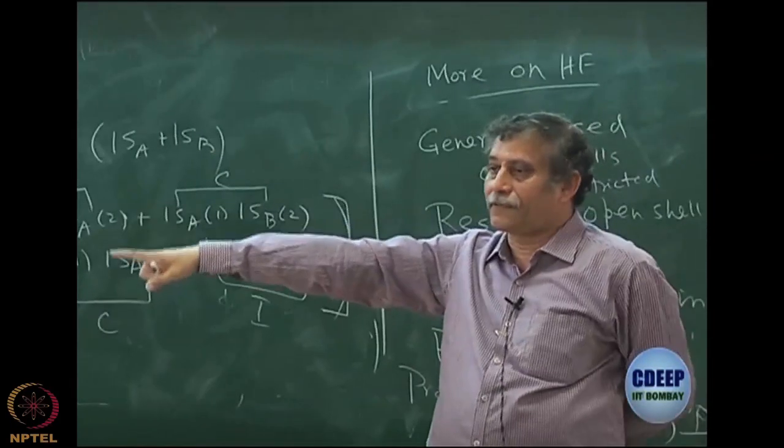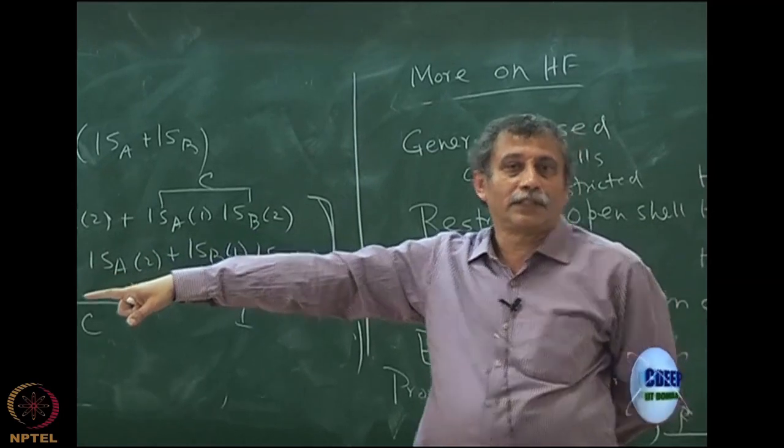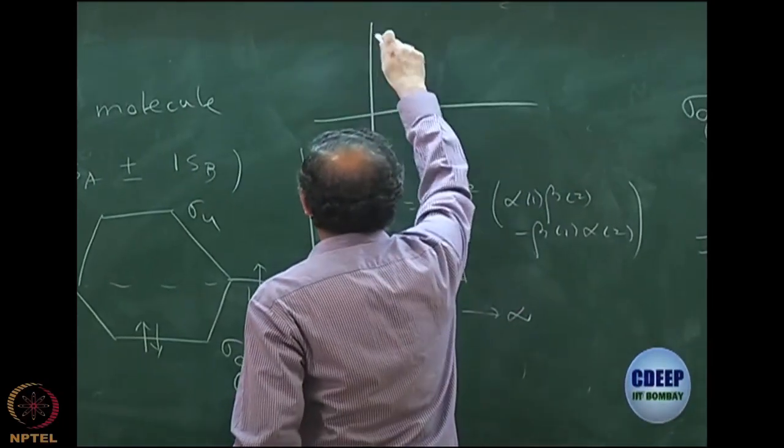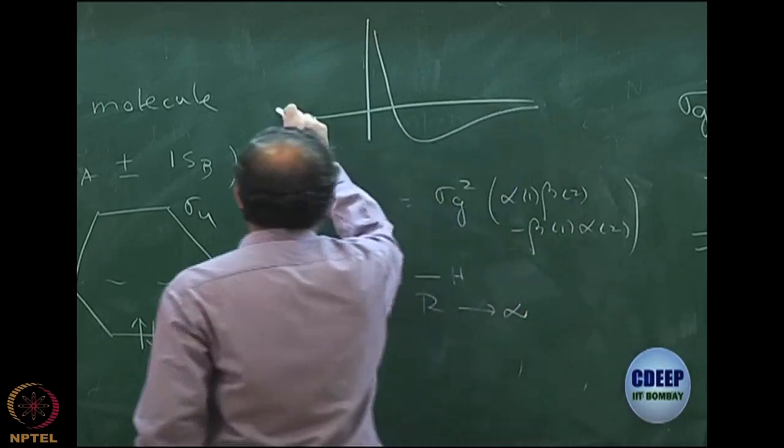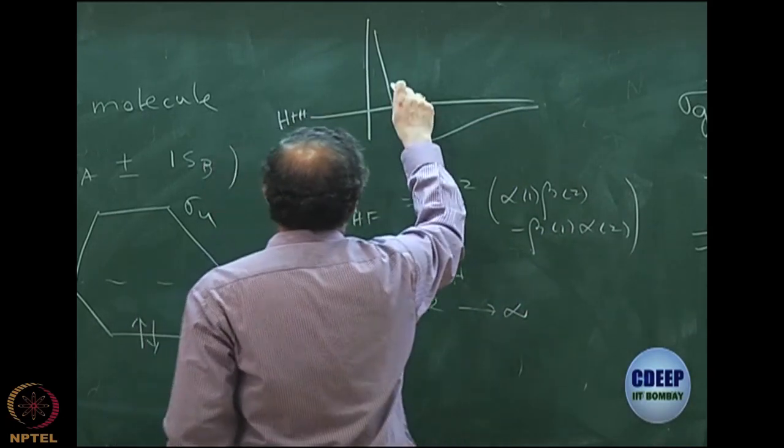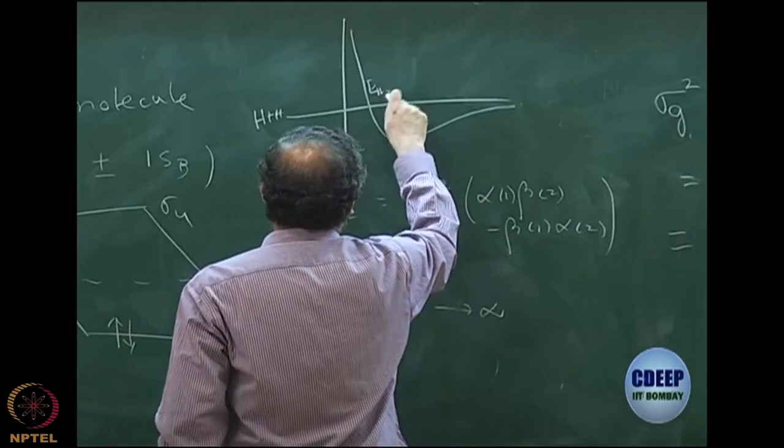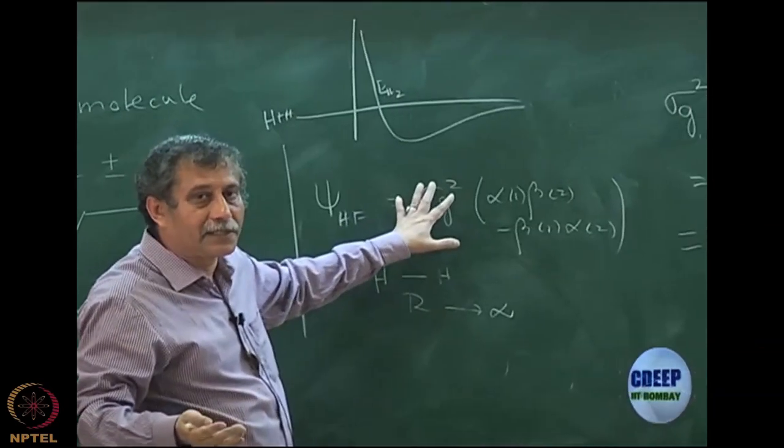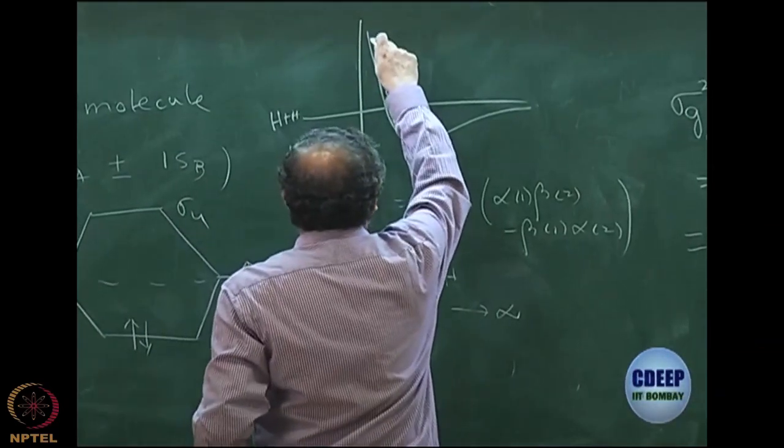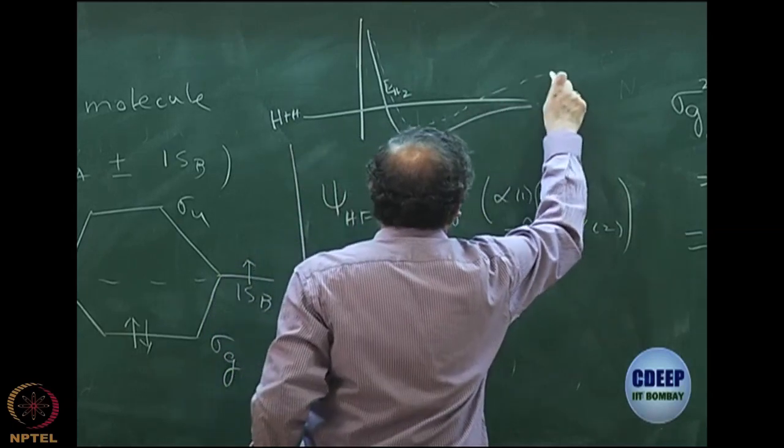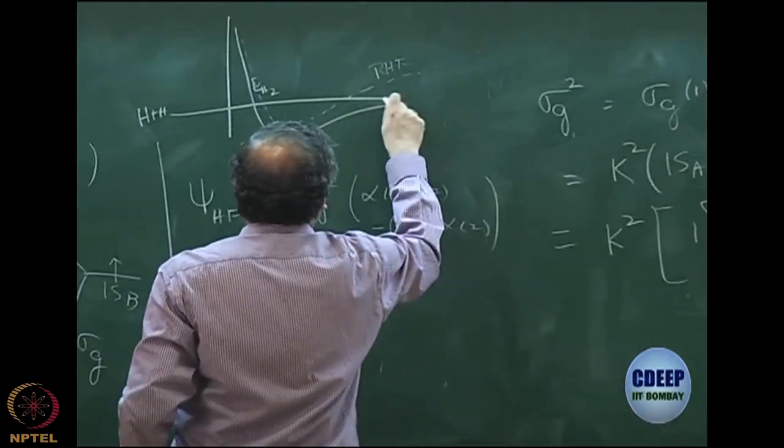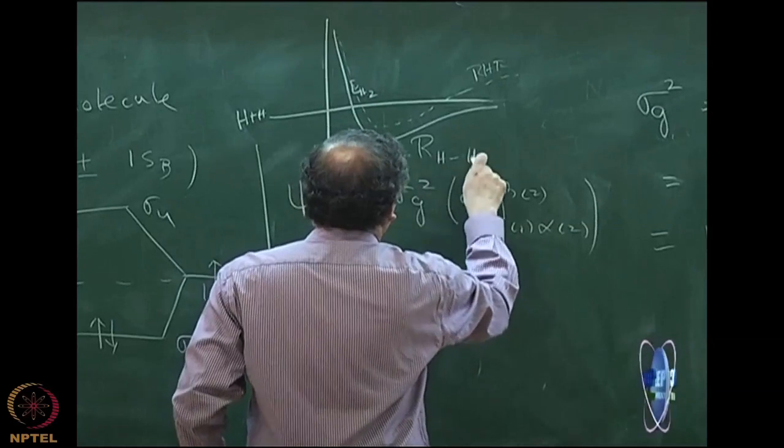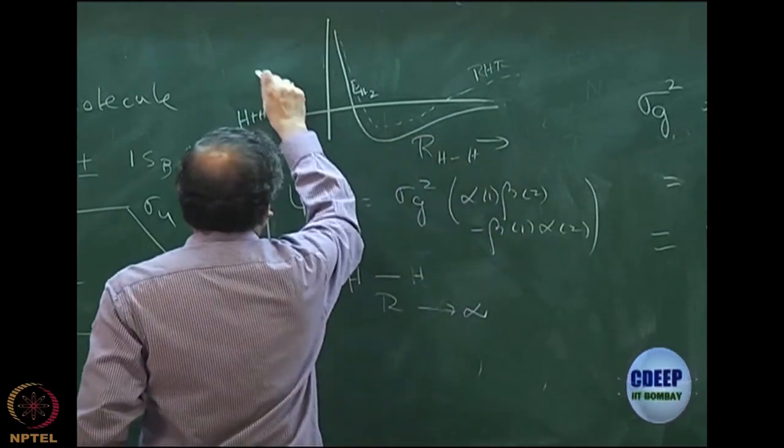Unfortunately, if you do RHF, that will not come. Let us say that this is my actual curve. This is H plus H energy. This is the potential energy of H2. Remember, this is the total energy of H2, which means apart from the electronic energy, I have added the nuclear-nuclear repulsion. If you do Hartree-Fock, then you will get something like this. This is your RHF. It will actually overstep this line at a large distance. This is your distance R_HH and this is the total energy.